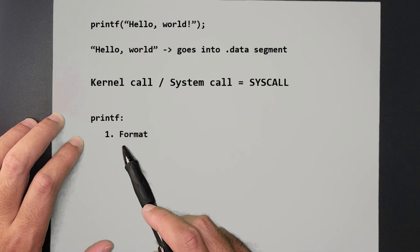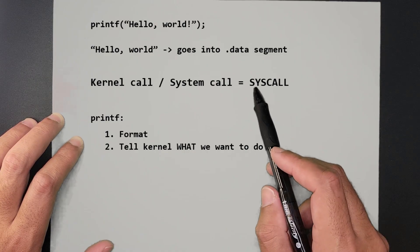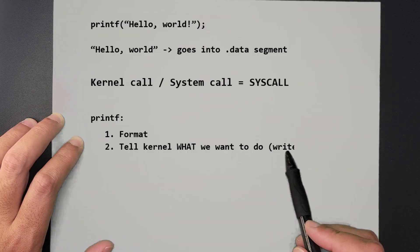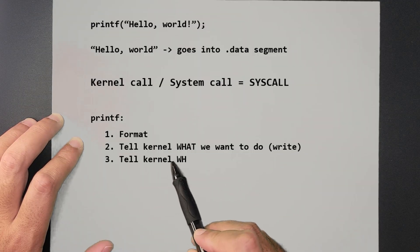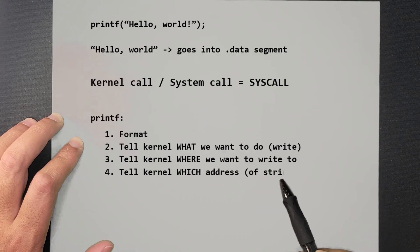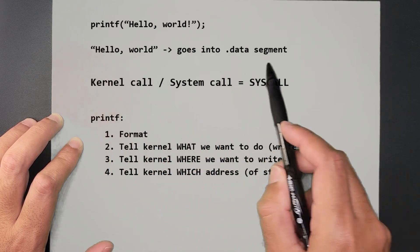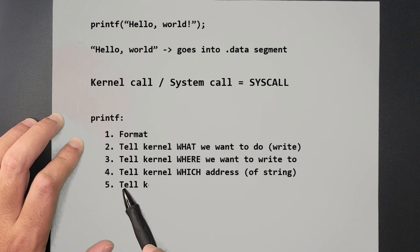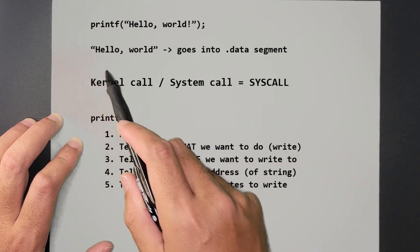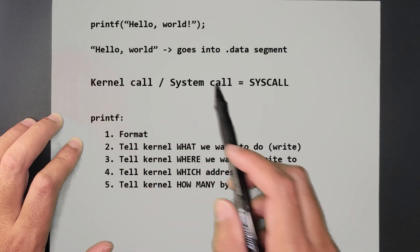Next we need to tell the kernel what we want to do, because there are hundreds of kernel calls we can make. We need to tell it that we want to write, then we need to tell it where we want to write to, then what we're writing - in this case it's going to be the address of our string - and finally we need to tell the kernel how many bytes we want to write.